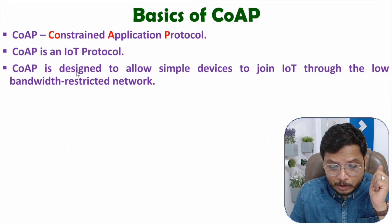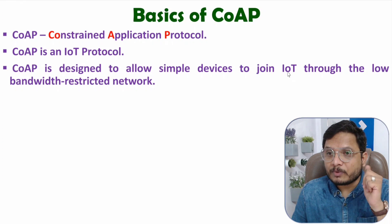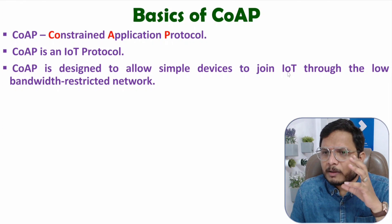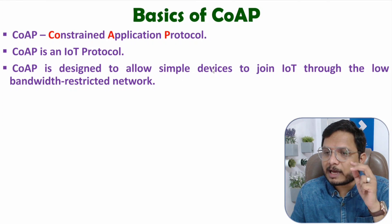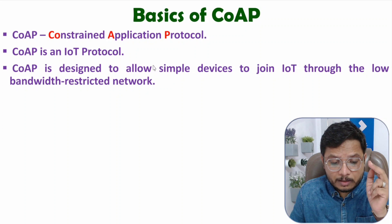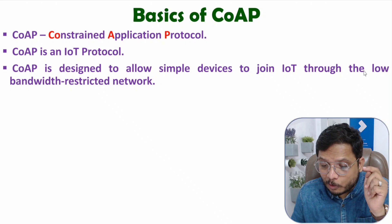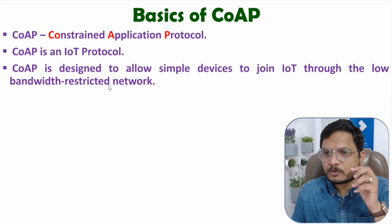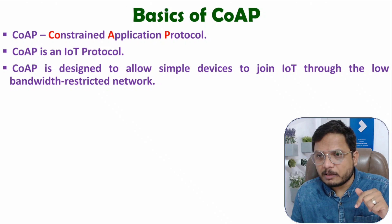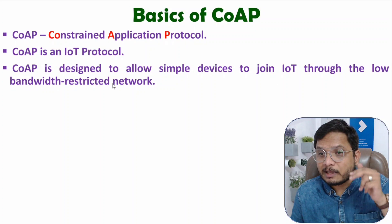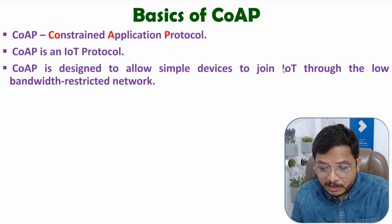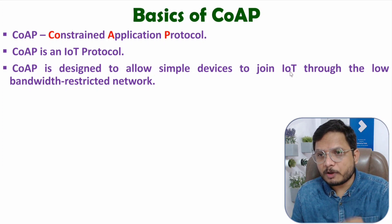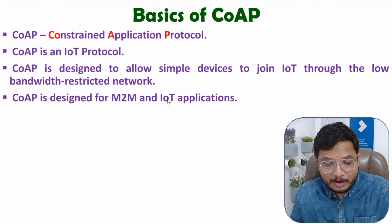CoAP is designed to allow simple devices to join an IoT network. Simple devices here means embedded systems or sensor networks. Simple devices can join IoT networks using CoAP protocol where the network has lower bandwidth and restricted connectivity. Communication happens with a lower data rate, so CoAP protocol is mainly used for low data rate communication in IoT systems. Lower category devices like embedded systems can communicate with IoT systems using CoAP protocol. CoAP is designed for M2M and IoT applications.